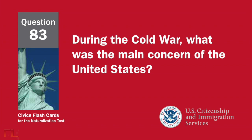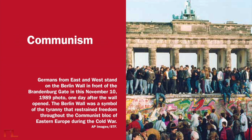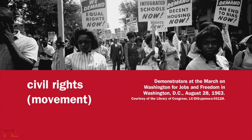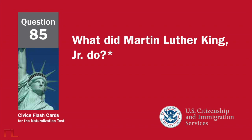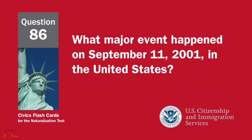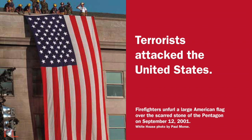During the Cold War, what was the main concern of the United States? Communism. What movement tried to end racial discrimination? The Civil Rights Movement. What did Martin Luther King Jr. do? Fought for civil rights, or worked for equality for all Americans. What major event happened on September 11, 2001 in the United States? Terrorists attacked the United States.